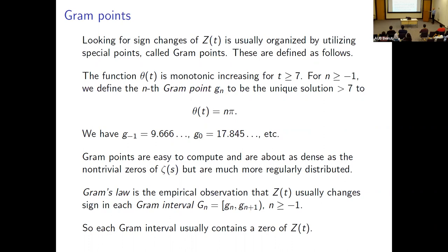When n = −1 there are two solutions if you allow t below 7, but restricting to t ≥ 7 gives a unique solution for each n ≥ −1. The zeroth gram point is 17.845. These are easy to compute because we have the simple approximation for θ(t).